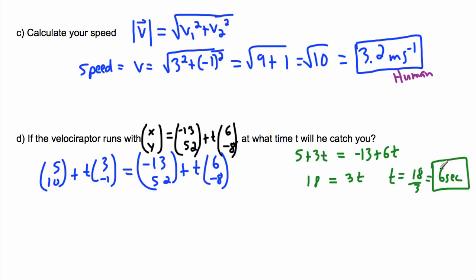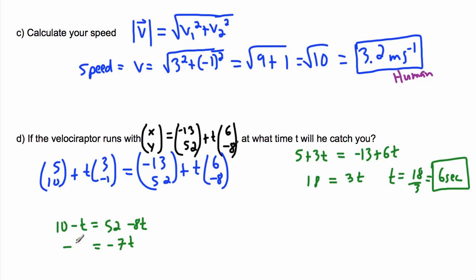Let's double-check using the y-component parametric equation. We have 10 minus t = 52 minus 8t. Moving minus t to the right and 52 to the left: 10 minus 52 equals minus 8t plus t, so minus 42 equals minus 7t. Therefore t equals minus 42 divided by minus 7 — the negatives cancel and 42 divided by 7 is 6 seconds. It works!